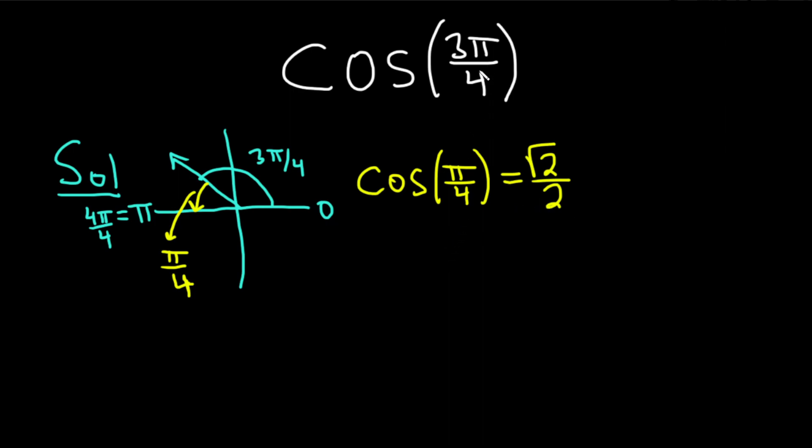So now the key fact is that the trig function values of an angle and its reference angle are the same, except for possibly a sign difference. That means that the cosine of 3π/4 is going to be this, or it's going to be the opposite of this. So we have to think about whether cosine is positive or negative over here.